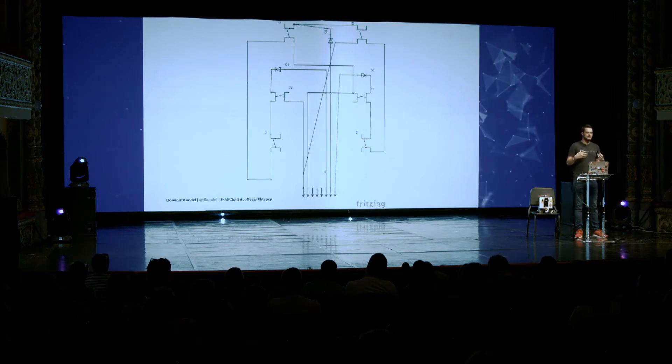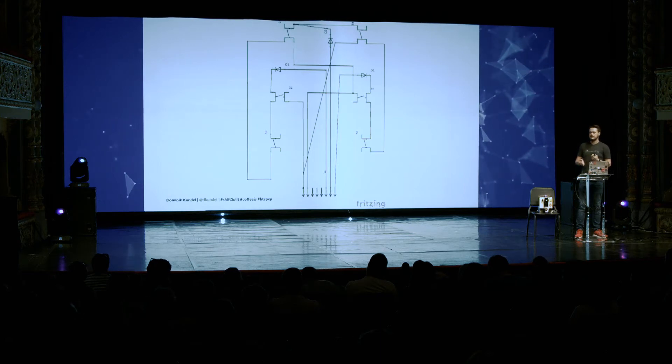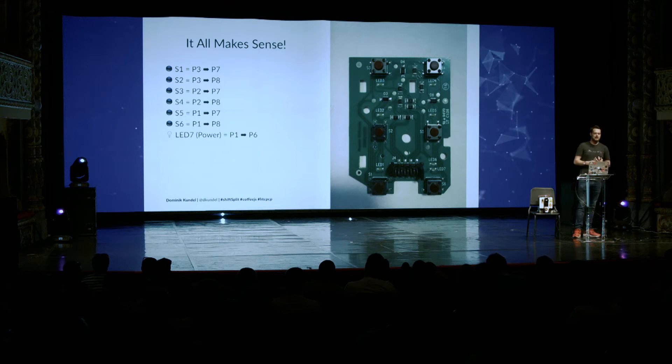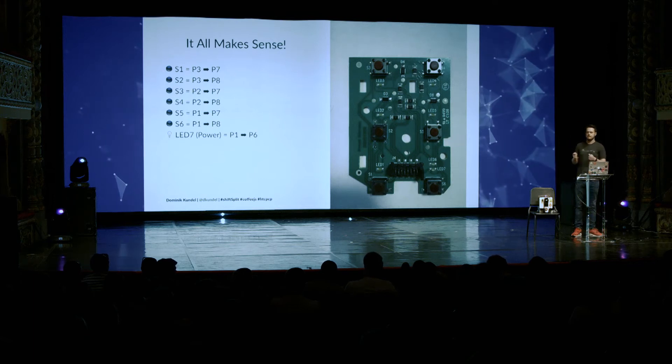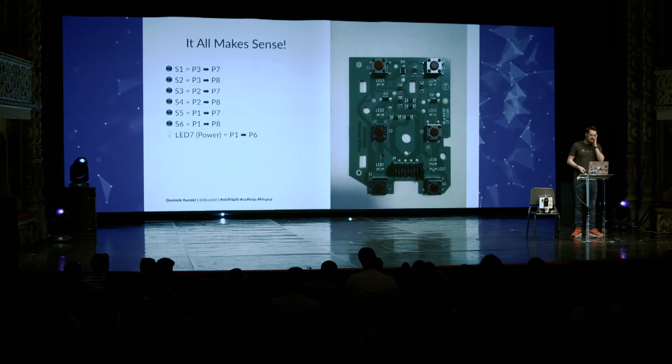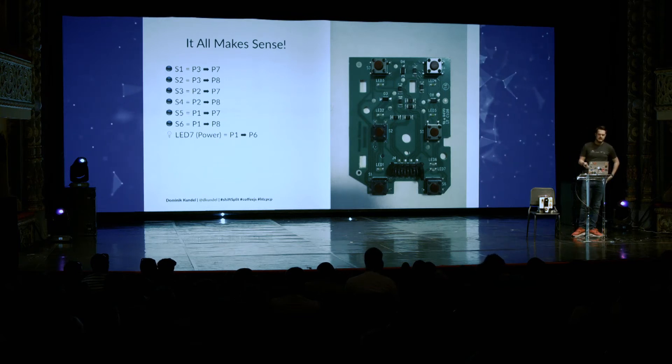We removed all the LEDs from our diagram and added the diodes, ending up with a more cleaned-up diagram. This suddenly made us realize that basically all the switches were dependent on a combination of two pins. S1 was connected between P3 and P7. S2 was P3 to P8. You can see all of them map ultimately to pin seven or eight — that's why they always triggered. But they're dependent on what value we set on the other end. That meant we could actually solve this now, and the easiest way was if we could mimic the switches.